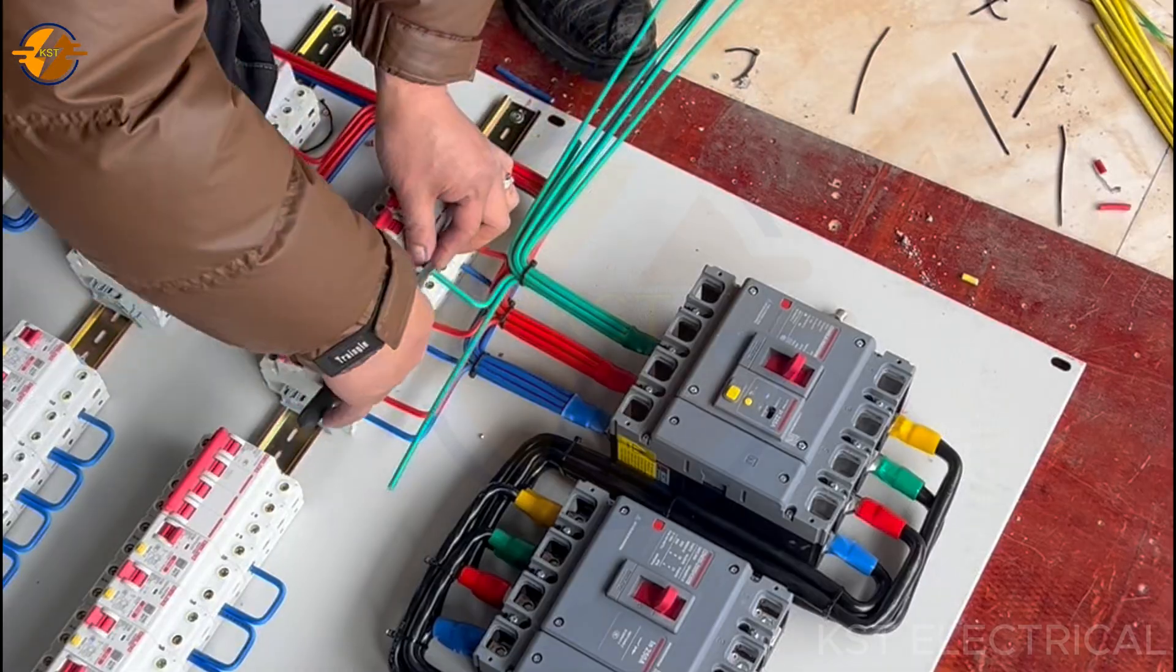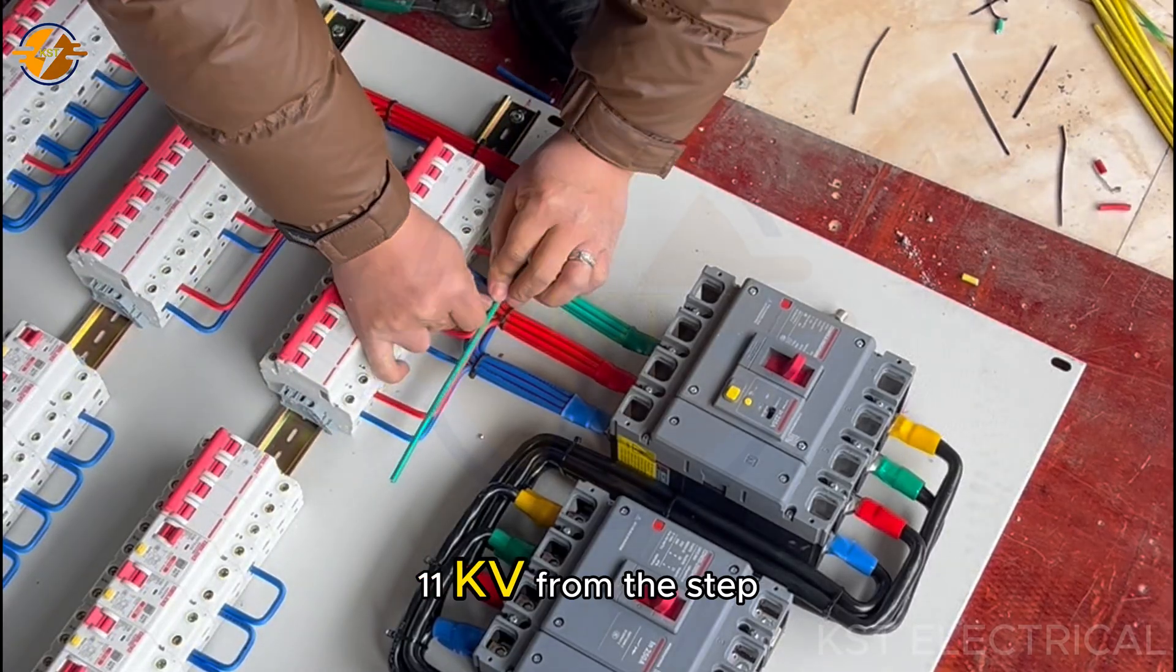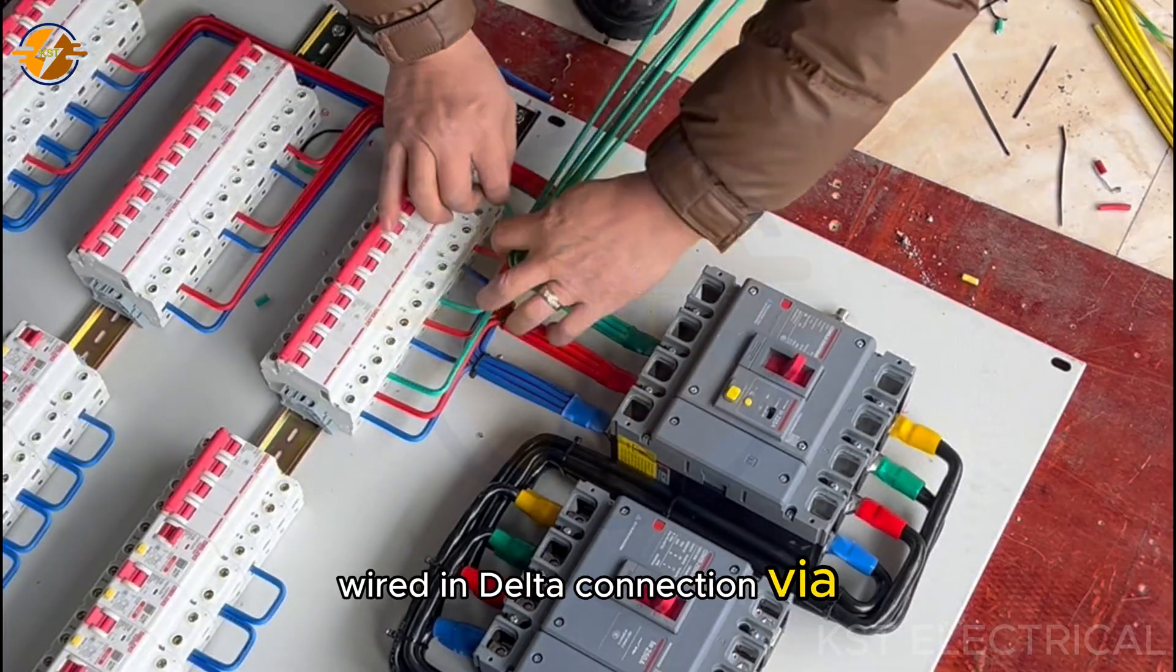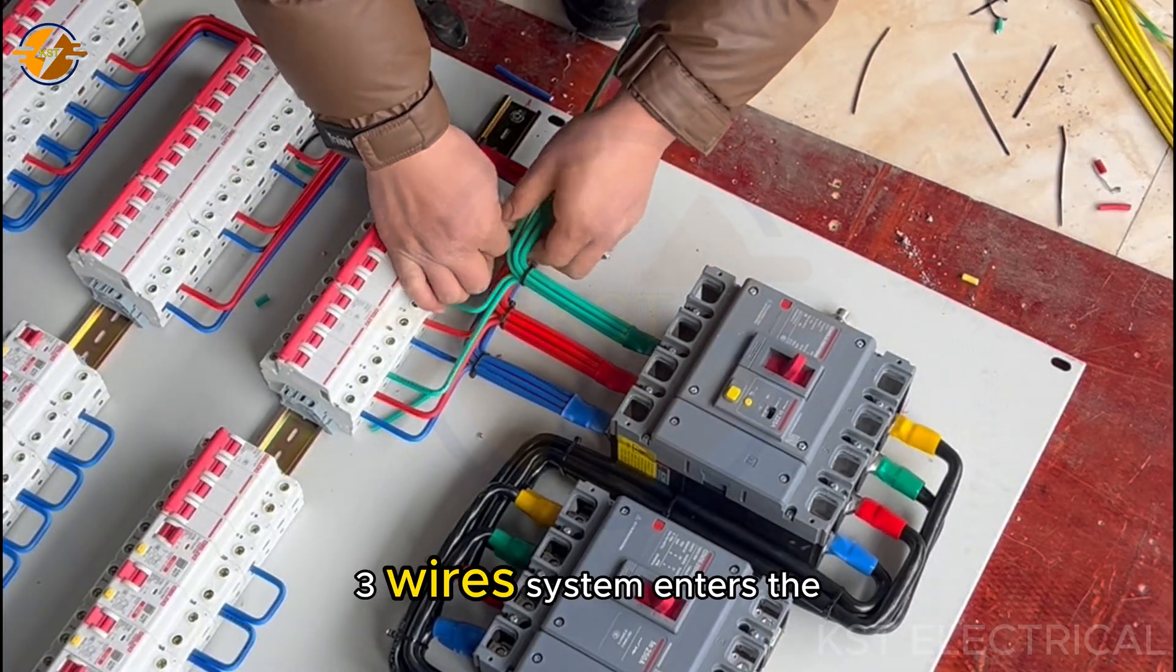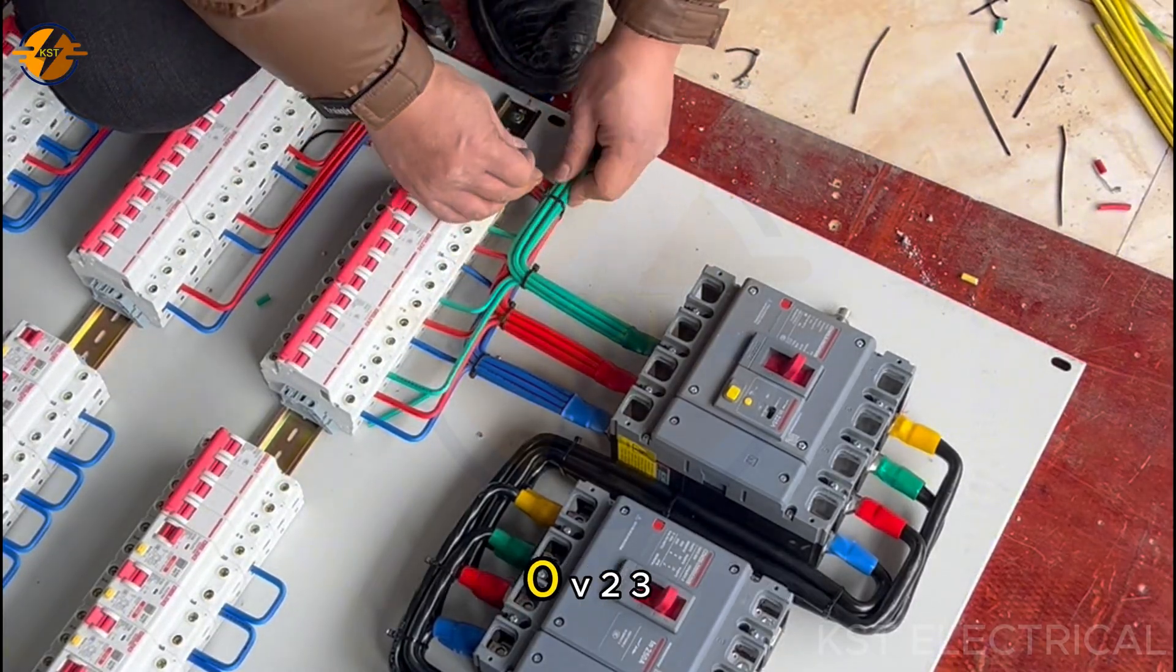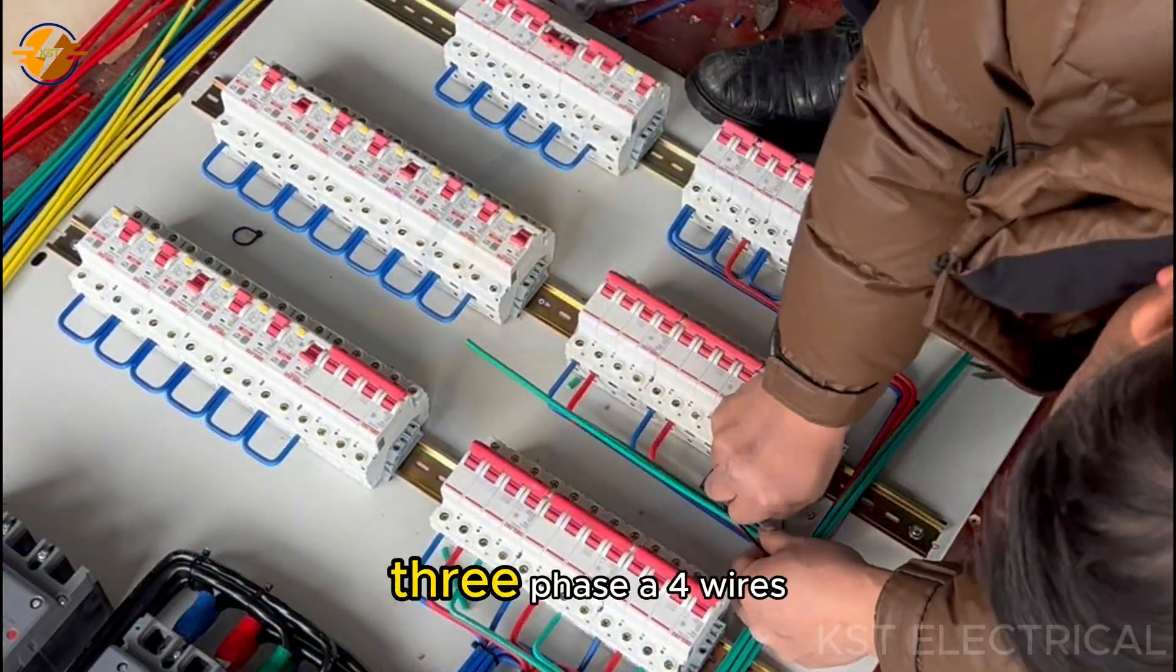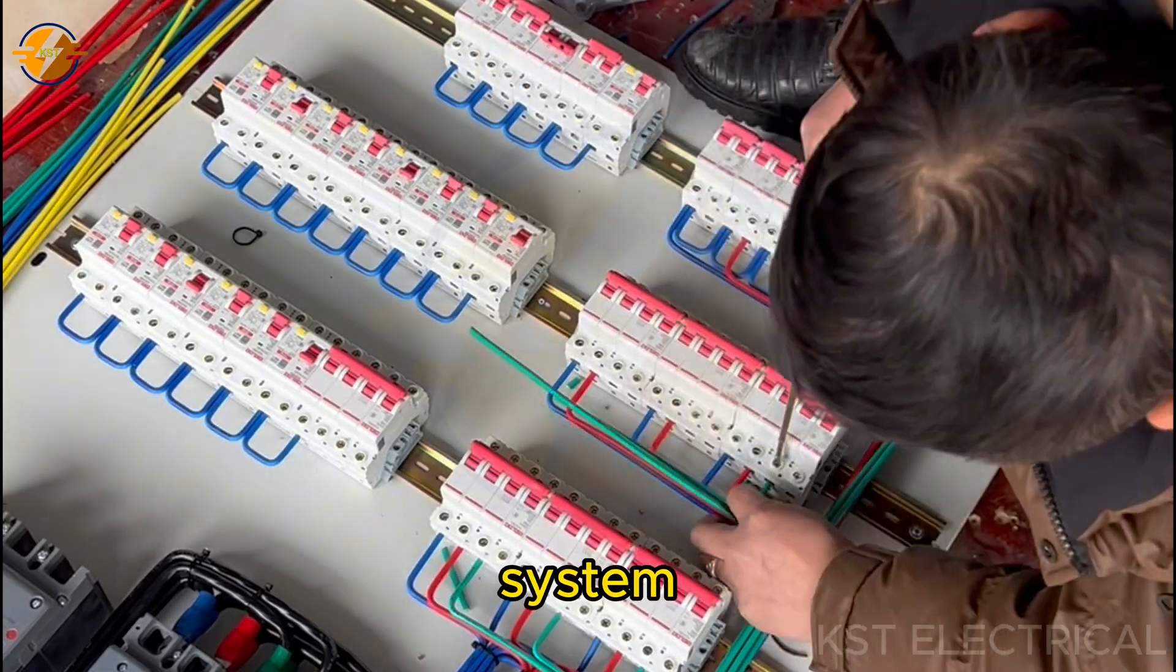For example, in the UK and EU, 11 kV from the step-down transformer wired in delta connection via three-phase three-wire system enters the 400V to 300V distribution transformer wired in star Y connection three-phase four-wire system.